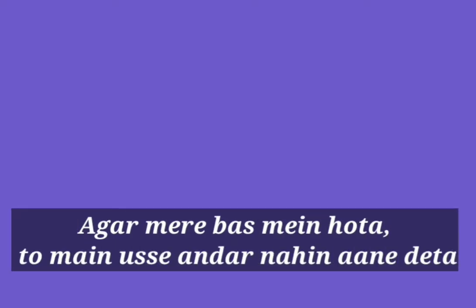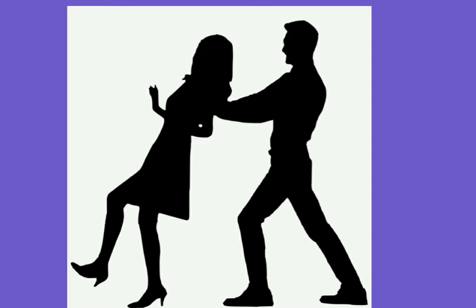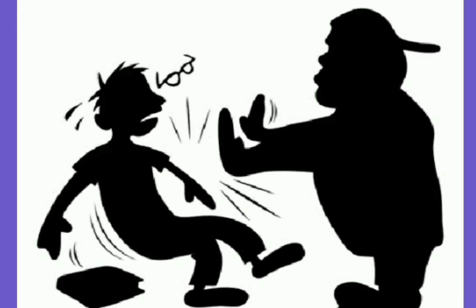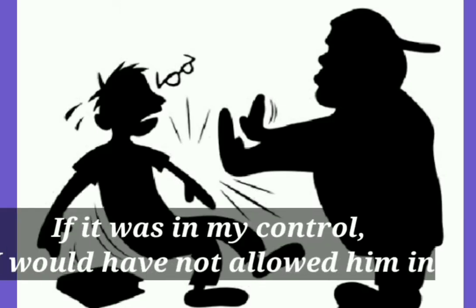The next sentence is: 'Agar mere bas mein hota, toh main usse andar nahi ane dayta.' What do we say for 'agar mere bas mein hota'? It is said 'if it was in my control.' So: 'If it was in my control, I would have not allowed him in.'